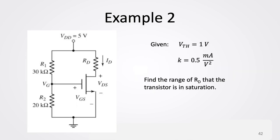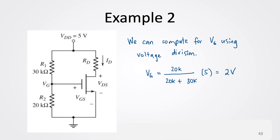Moving on to Example 2 — this is also a voltage divider bias common source amplifier, but this time the value of RD is not given. Instead, we are asked to find the range of RD for which the transistor remains in saturation. We start with the parameters we can compute from the given values. Since R1 and R2 are already given, we first compute VG using voltage division.